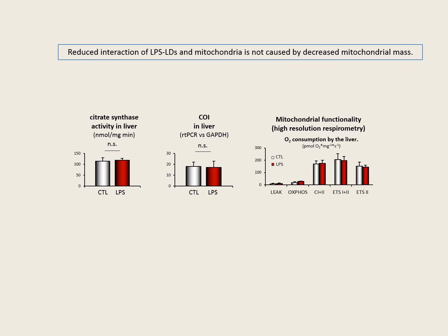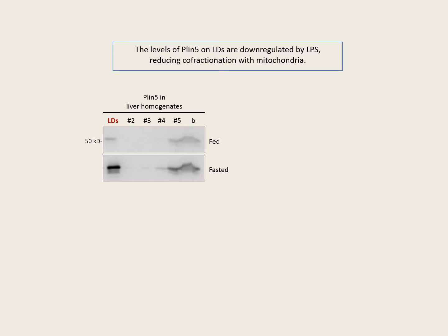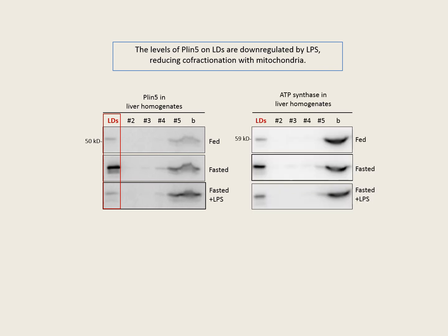Interestingly, the only protein known to be involved in lipid droplet-mitochondrial interaction, Perilipin-5, Plin-5, was in the top 20 of the most downregulated proteins. This decrease of Plin-5 in lipid droplets after infection was corroborated by density gradient. We found that the presence of Plin-5 on the lipid droplet fraction, which is higher during fasting, was clearly reduced during infection. The same profile of co-fractionation was found for a mitochondrial protein, ATP synthase, probably reflecting the uncoupling between lipid droplets and mitochondria.